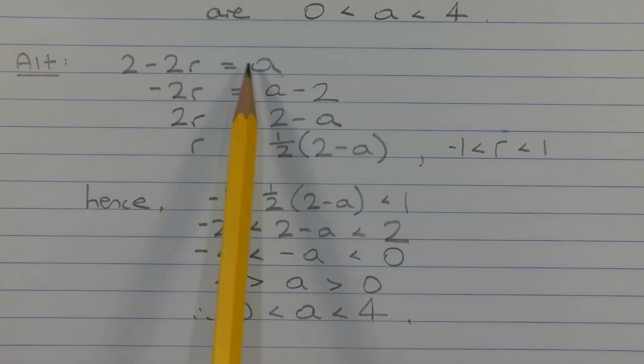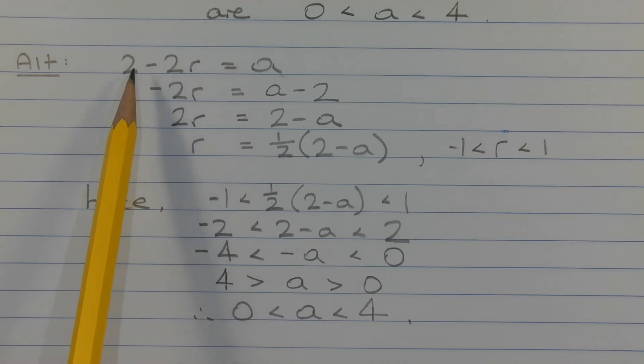Now very similar to the first way of solving the problem. What I'm going to do though this time is isolate the R rather than isolating the A. So let's start off with 2 minus 2R equals A. I'm going to isolate the R. So negative 2R is equal to A minus 2. Then I'm going to divide both sides by negative 1. We get 2R is equal to 2 minus A. And then dividing both sides by 2, we get R is equal to half times 2 minus A in brackets.